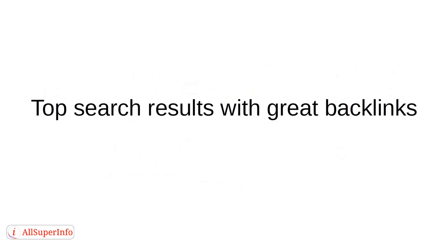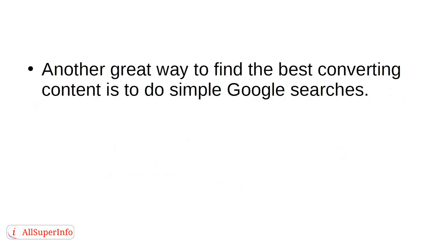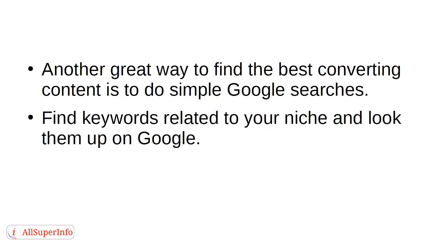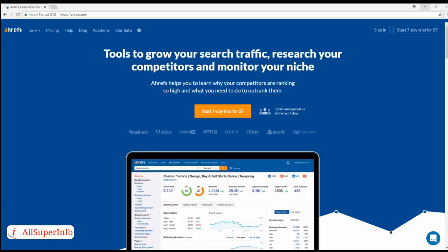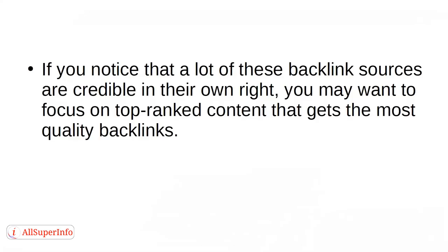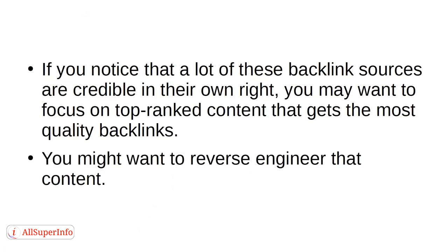Top Search Results with Great Backlinks: another great way to find the best converting content is to do simple Google searches. Find keywords related to your niche and look them up on Google — you'll see the top articles or content related to that topic. Use tools like ahrefs.com to see the backlinks of these articles. If a lot of those backlink sources are credible in their own right, focus on top-ranked content that gets the most quality backlinks, and reverse-engineer that content.